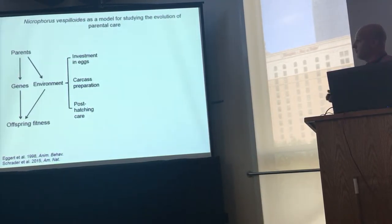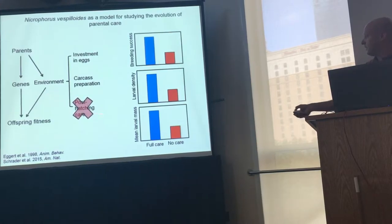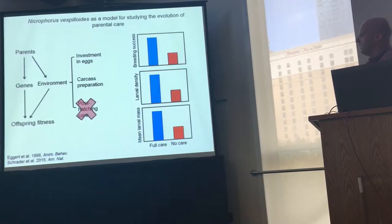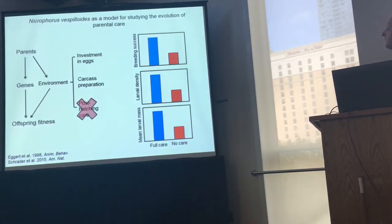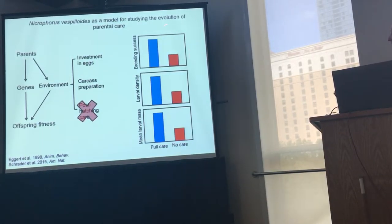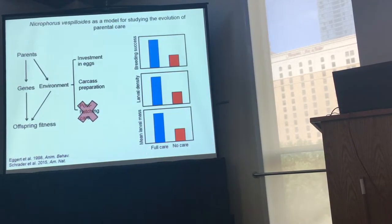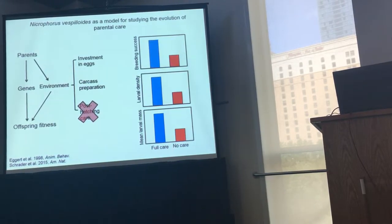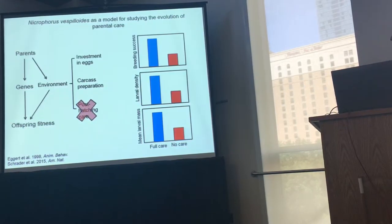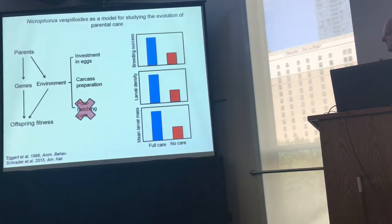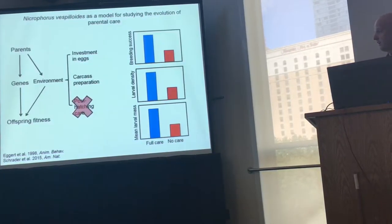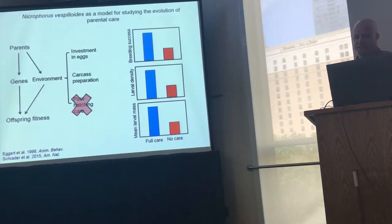What's really useful about this system is that you can remove post-hatching care experimentally and ask how it affects fitness. Lots of experiments have been done like this since the late 90s, and what these show is that parental care is good for offspring. So these are just some cartoonish results: with full care versus no care, when beetles receive full care, breeding success is higher, larval density — a measure of brood size — is higher, and mean larval mass is also higher than when they receive no post-hatching care. So parental care is generally good.